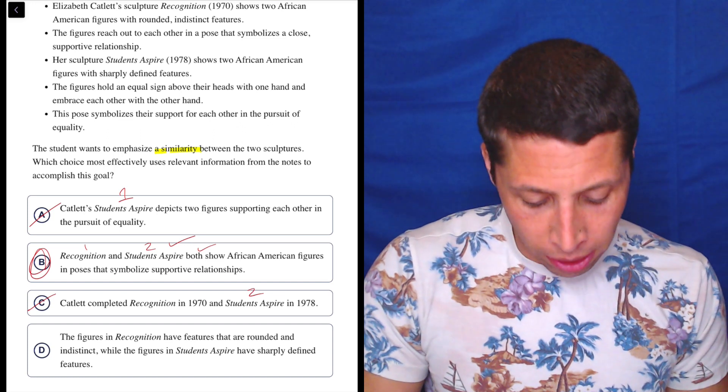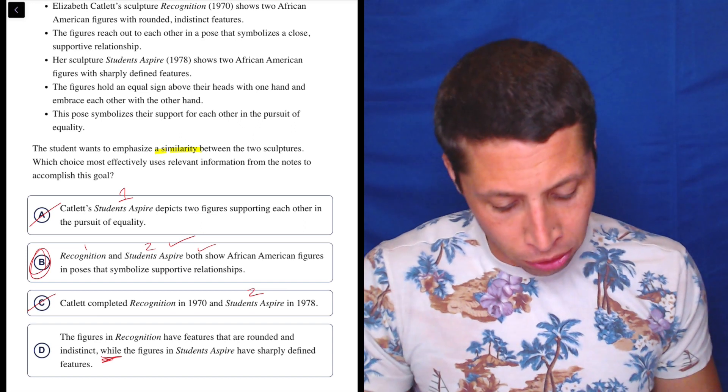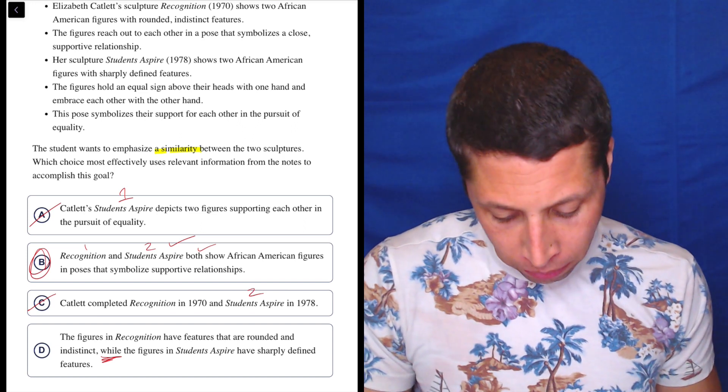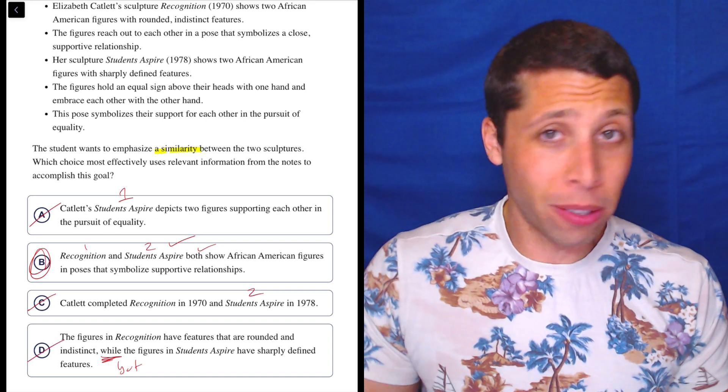D: The figures in Recognition have features that are rounded and indistinct, while the figures in Students Aspire have sharply defined features. This is a contrast, right? This is a but word. So no, there's not a similarity, right?